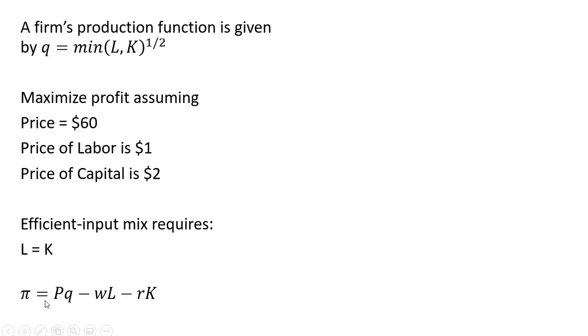So let's write our profit function. Profit is going to be price times output minus the cost of labor minus the cost of capital, where W is the wage, which is going to be set to $1. R is going to be the price of capital, which is set to $2. And P, the price is going to be set to $60. Let's make our substitutions for those prices.